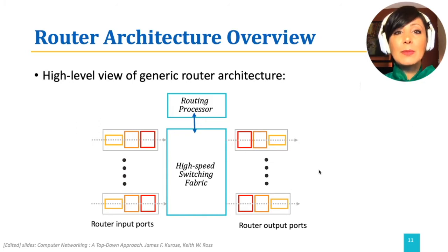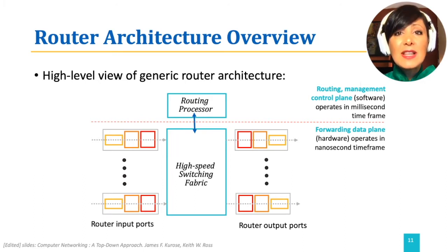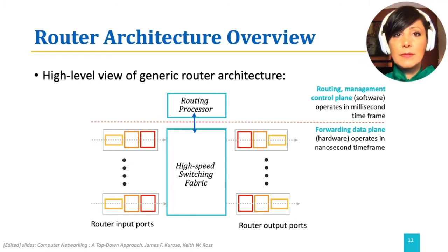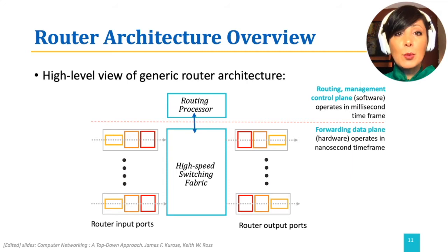The routing processor performs the control plane functions. In traditional routers, this means that it runs the routing protocol. In SDN routers, the routing processor communicates with the remote controller to communicate the required information with it and receive the forwarding table entries.